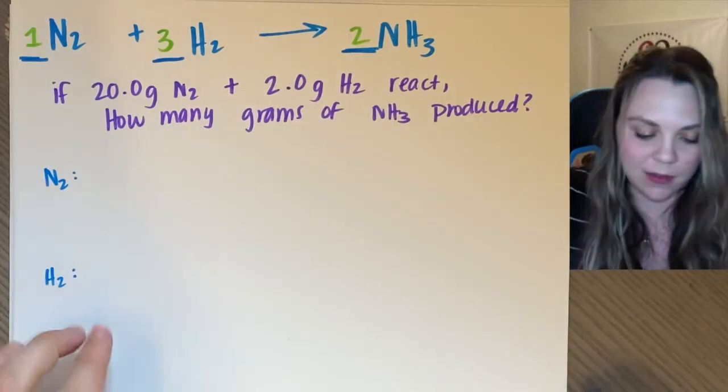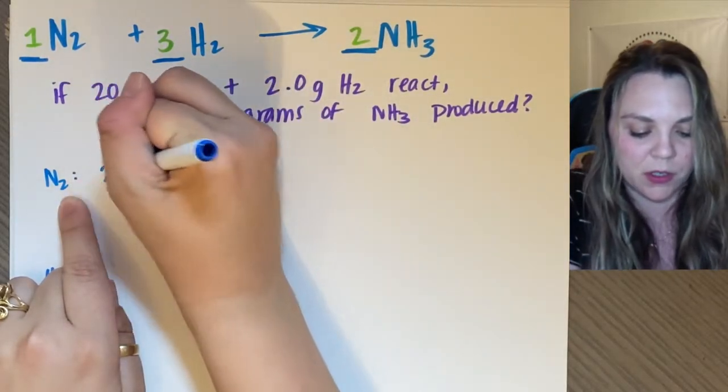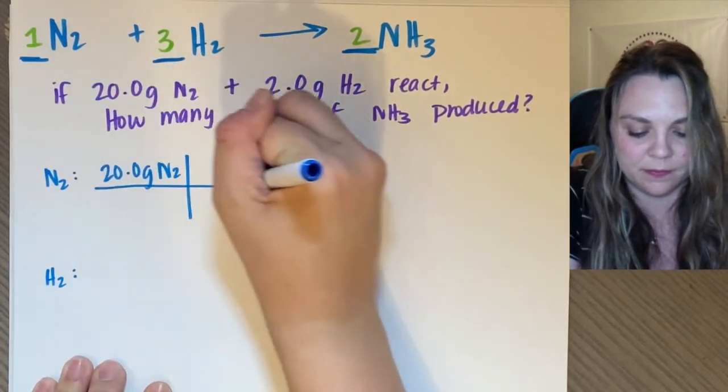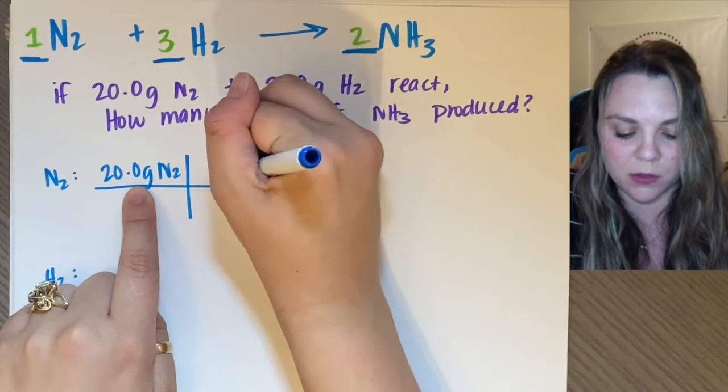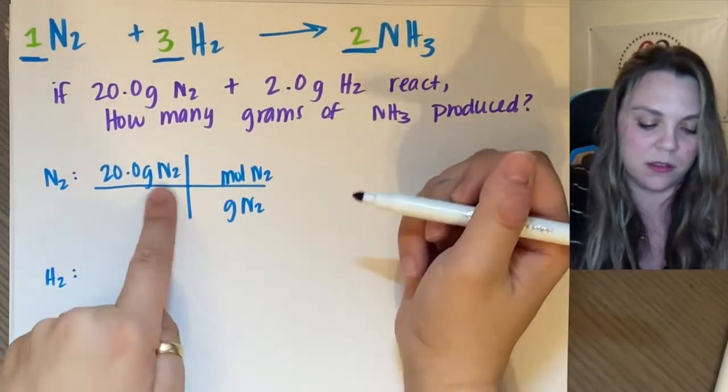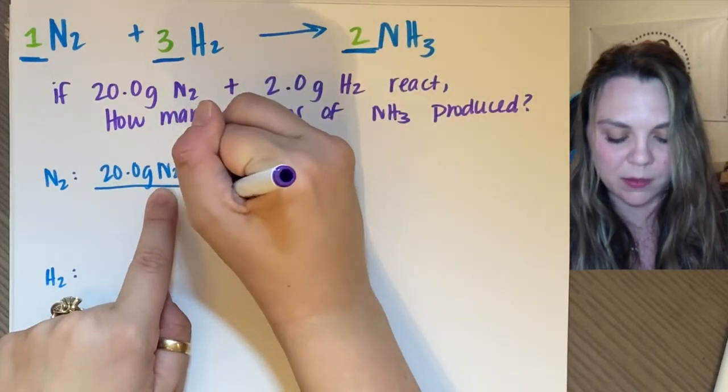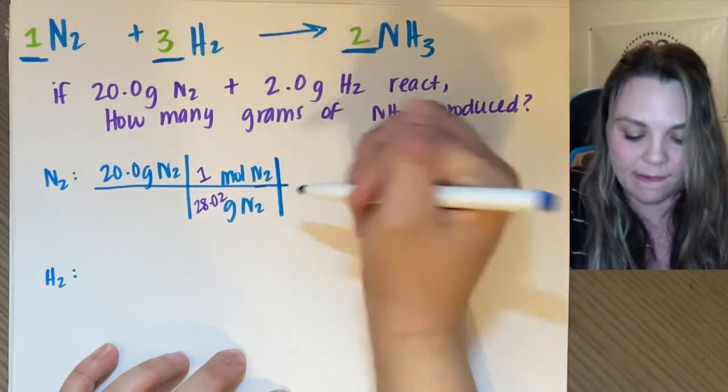And then I start with my given. So we'll do nitrogen first. 20 grams of nitrogen. I need to convert out of grams of nitrogen and into moles of nitrogen. So I use my molar mass. Each nitrogen is 14.01. So this is 28.02 grams for every one mole.